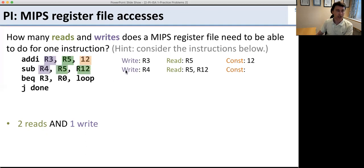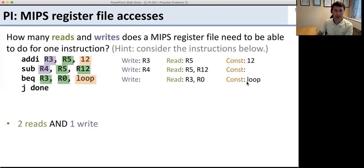For the add instruction, we need one write and two reads, but no immediate. For branch equal, we read two register file entries and need to read an immediate. For a jump instruction, all we need is a constant. Looking across all instructions, in the worst case we need to write one and read two — so two reads and one write.